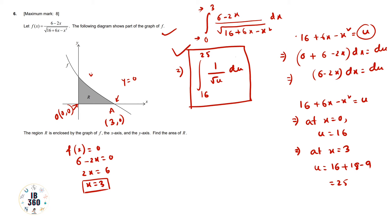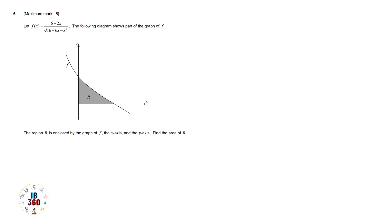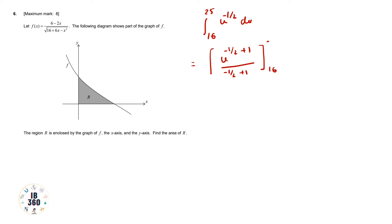Now we integrate. Note that 1/√u = u^(-1/2). So we have the integral from 16 to 25 of u^(-1/2) du. Applying the integration rule, this equals u^(-1/2 + 1) / (-1/2 + 1) = u^(1/2) / (1/2), evaluated from 16 to 25.